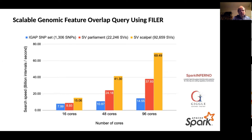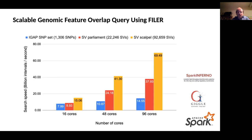All of this data can be scalably accessed, and shown here is an illustration of using Filer data and overlapping with genetic variants or structural variants of various sizes. As we can see, Filer allows for highly parallelizable access that scales linearly with the number of cores — as indicated on the x-axis as we scale from 60 to 96 cores, the speed on the y-axis increases linearly.